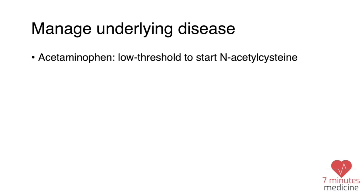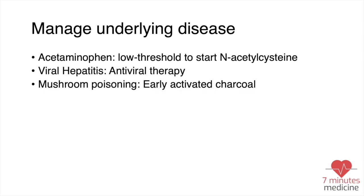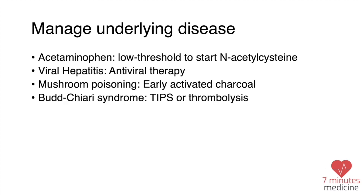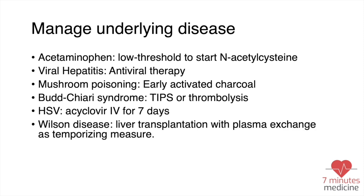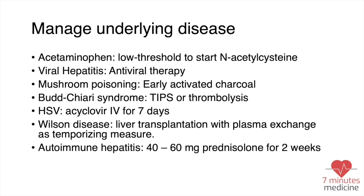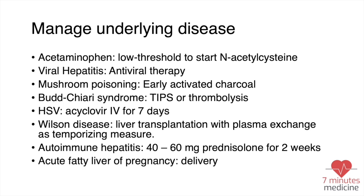The most important thing in the management of acute liver failure is to stabilize the patient first, then manage the underlying disease. For acetaminophen toxicity, give N-acetylcysteine. For viral hepatitis, give antiviral therapy. For mushroom poisoning, early activated charcoal. For Budd-Chiari syndrome, thrombolysis. For herpes simplex virus, acyclovir IV. For Wilson's disease, plasma exchange as a temporizing measure. For autoimmune hepatitis, steroids. For acute fatty liver of pregnancy, delivery.